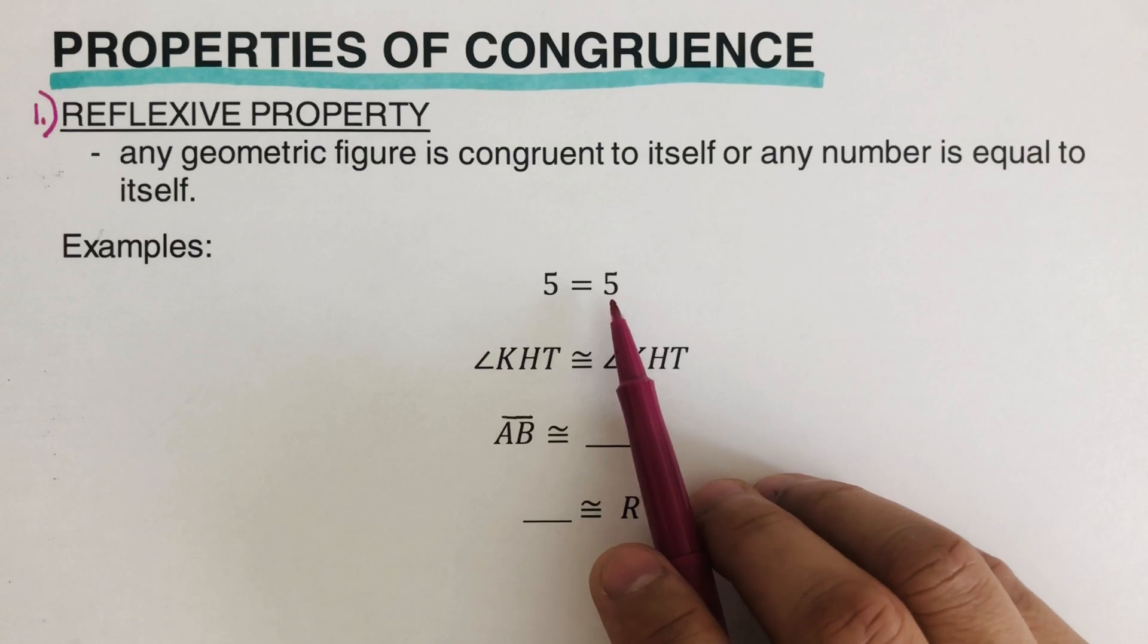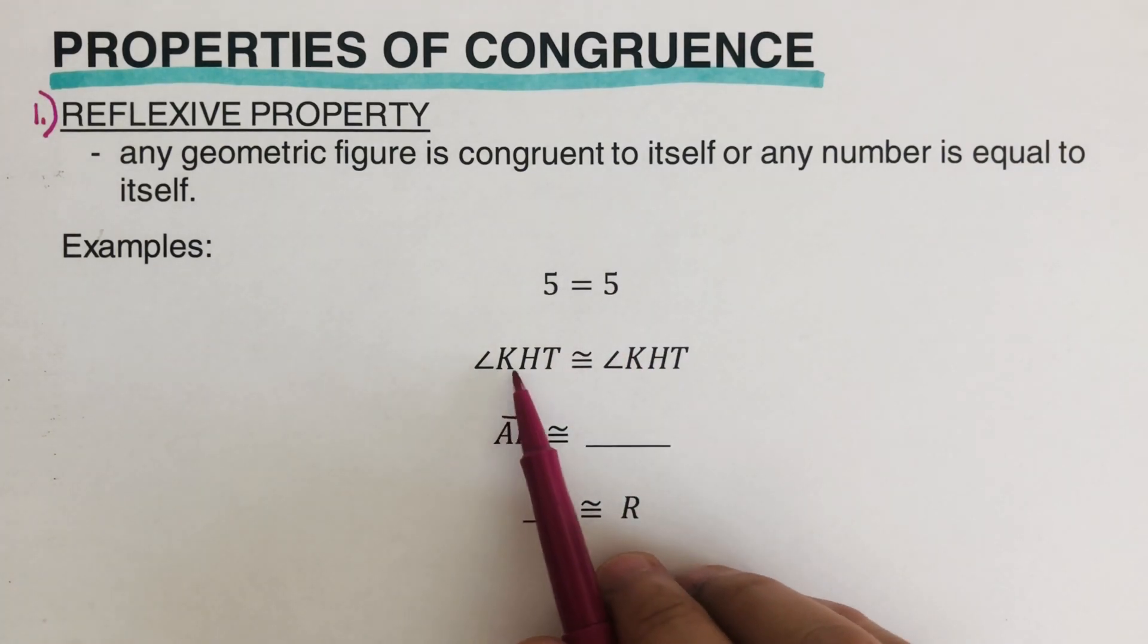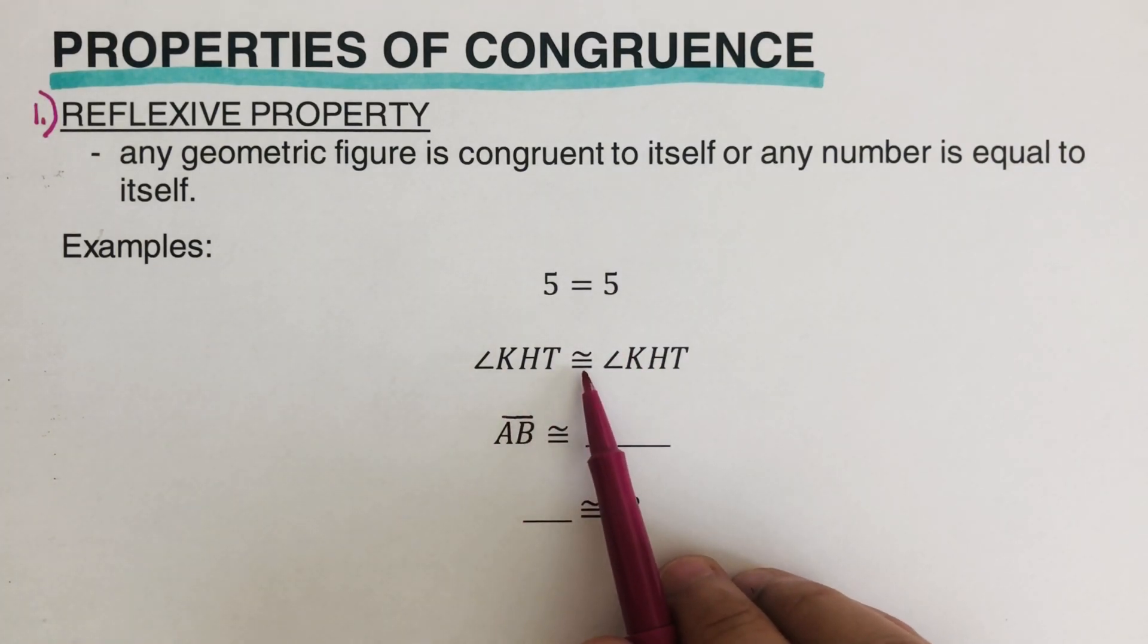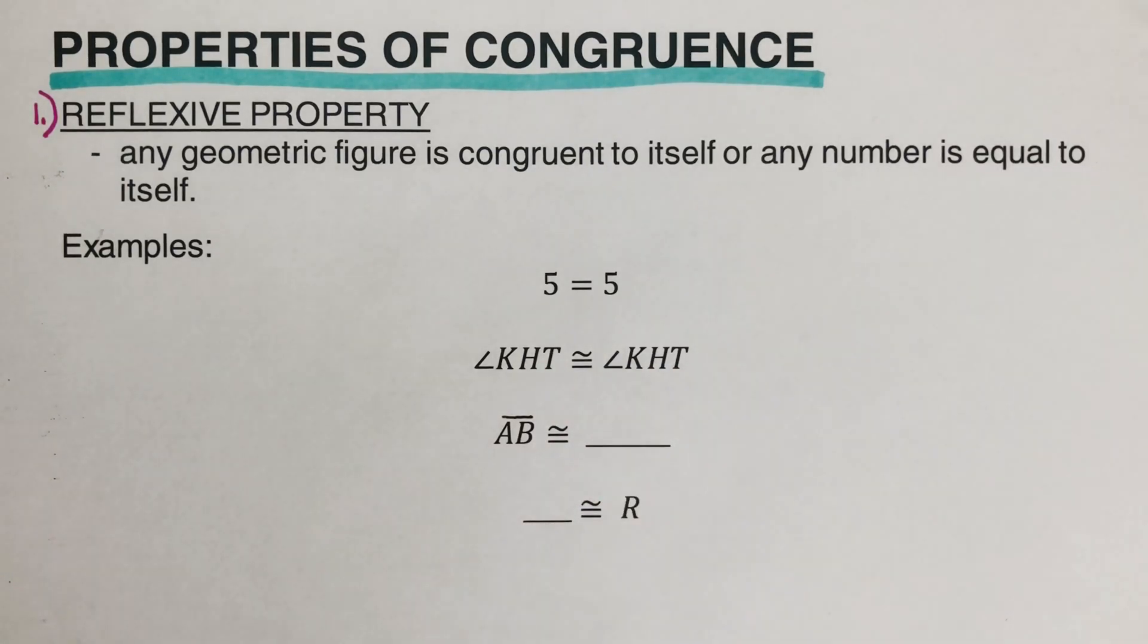5 is equal to 5. We can't say that 5 is equal to 6. No, that is not possible. So 5 is equal to 5. Angle KHT is congruent to angle KHT. So it is congruent to itself.